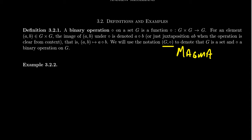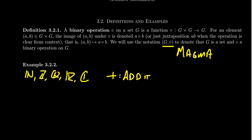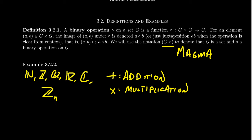We're quite accustomed to many examples of things like this. Take, for example, the sets: the natural numbers, the integers, the rationals, the reals, the complex numbers. These are all sets with the binary operation of addition. If you add together two natural numbers, you get back a natural number; two integers give an integer; two rationals, two reals, two complex numbers — you always get back a number of that same type. Multiplication is also a binary operation on these sets. This is also true for Z_n, the set of congruence classes of integers mod n, with modular addition and modular multiplication.